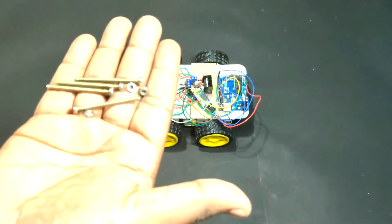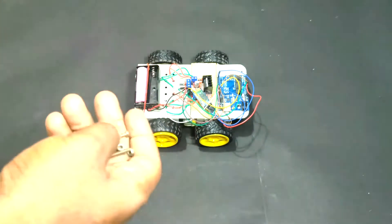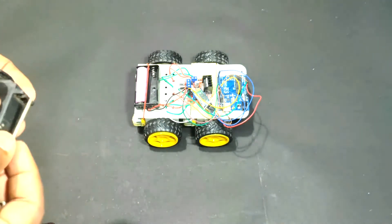Take the Bluetooth controlled car that we already done. Link for the video in the description. Now, add servo motor and relay to the Bluetooth controlled car.